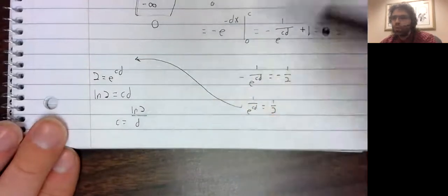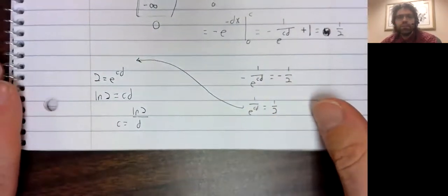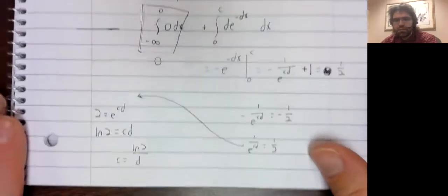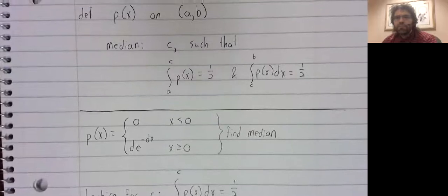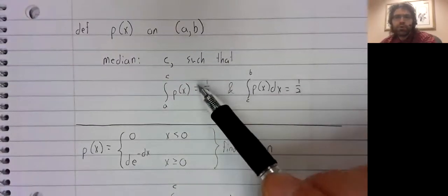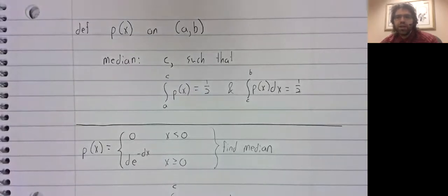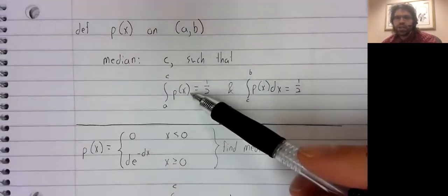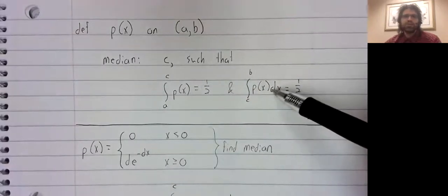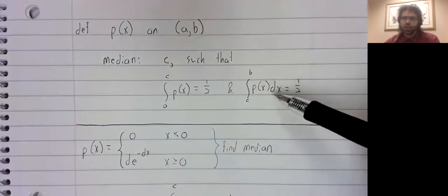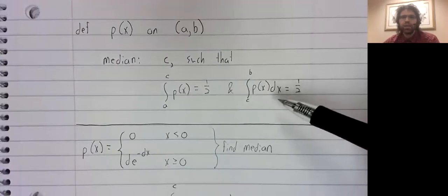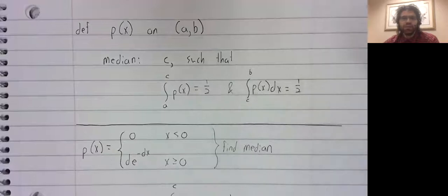I know that when I stated the median, I made it look like there were two conditions that had to be satisfied. But in fact, if you satisfy either condition, the other is satisfied automatically. So we only needed one of these integrals to be one half, and that forces the other integral to be one half automatically.